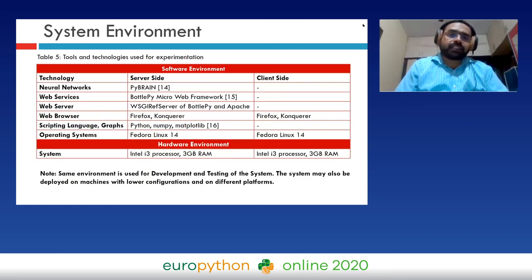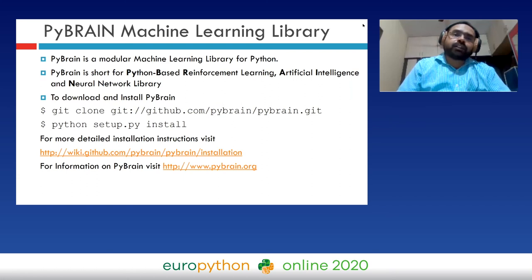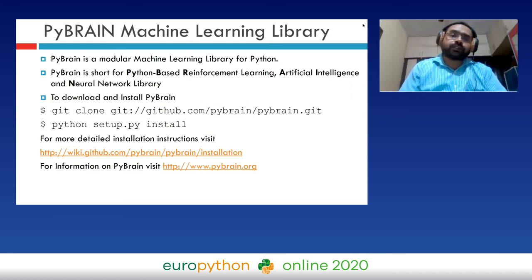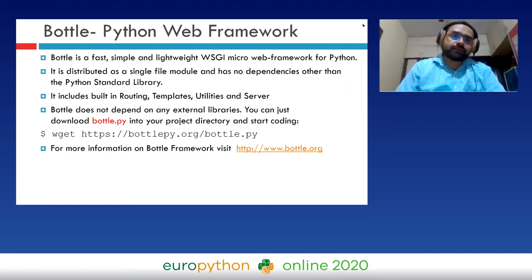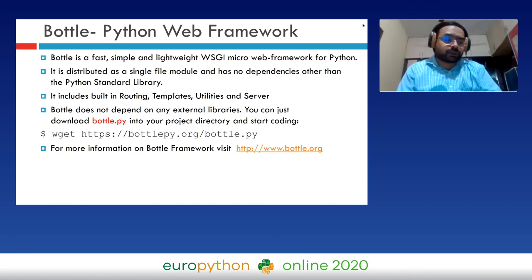We used the PyBrain library for neural networks, Bottle.py microframework for web services and web server, along with Apache, and Python NumPy and Matplotlib for drawing graphs. PyBrain stands for Python-Based Reinforcement Learning, Artificial Intelligence, and Neural Network library — a modular machine learning library for Python. Bottle is a fast, simple, and lightweight microframework for Python distributed as a single file with no dependencies — just include the file in your directory. It has built-in routing, templates, utilities, and server modules.